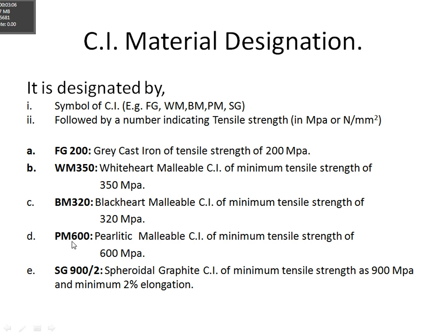Next example is PM600. PM indicates the pearlitic malleable cast iron, and 600 indicates its minimum tensile strength. The meaning of PM600 is it is the pearlitic malleable cast iron of minimum tensile strength of 600 MPa.